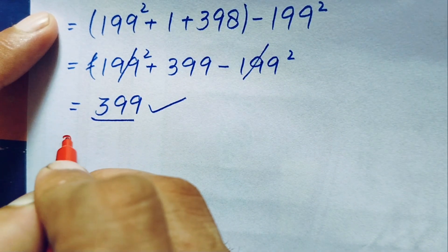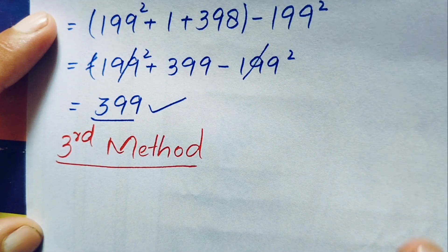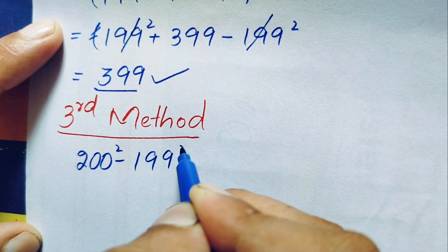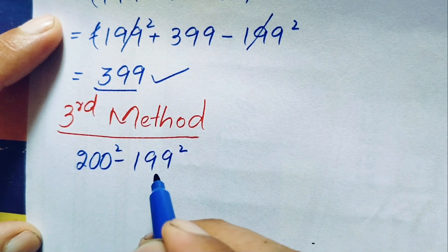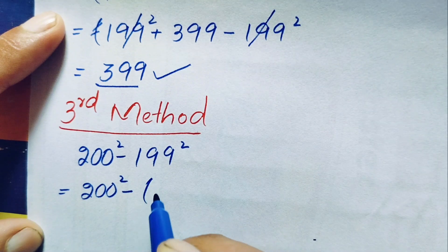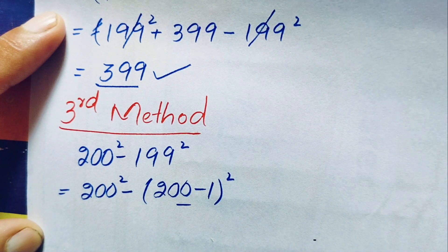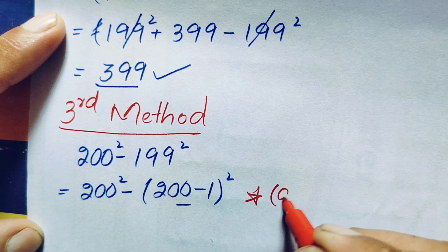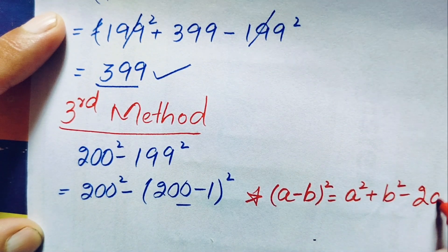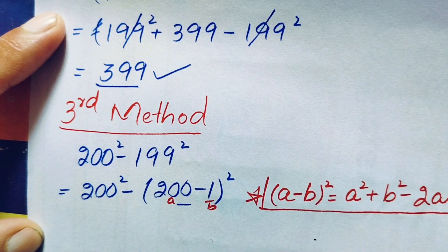Now for the third method, we rewrite the problem: 200 squared minus 199 squared. Here we change 199 to 200 minus 1, so this becomes 200 squared minus (200 minus 1) whole squared. In this term we use the identity: a minus b whole squared is equal to a squared plus b squared minus 2ab.